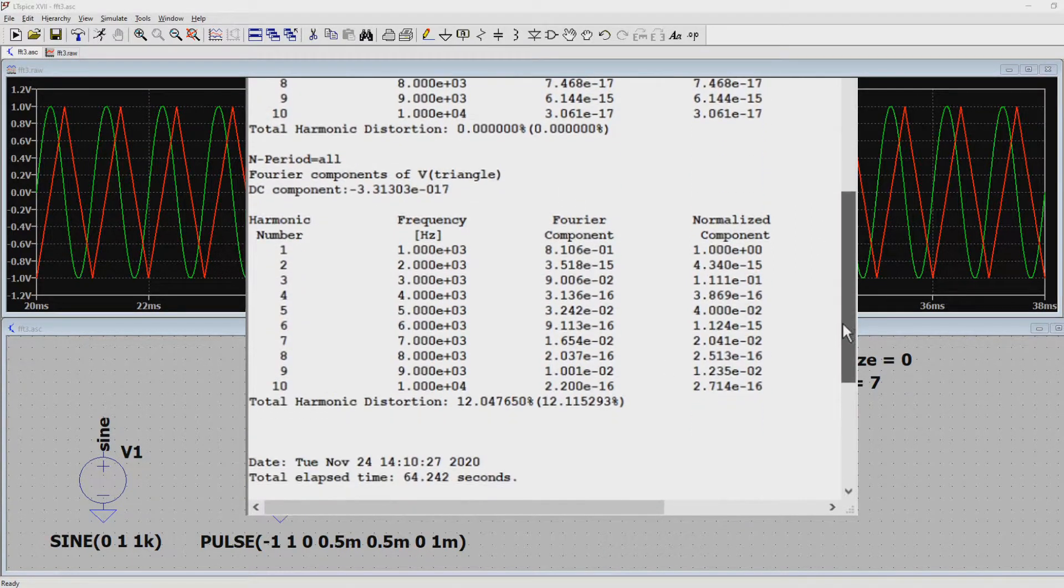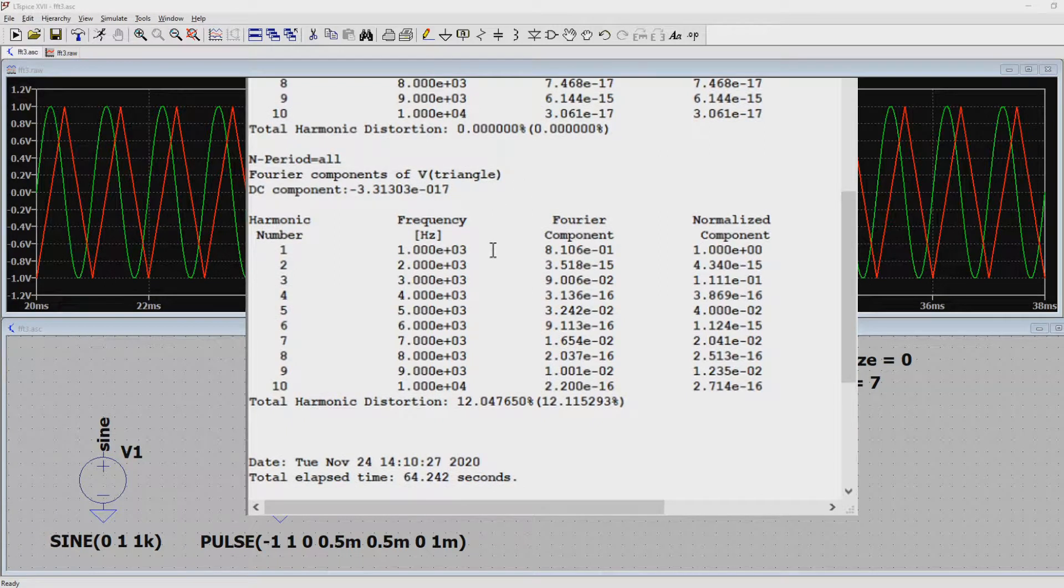Now under this analysis is the analysis of the triangle. As you can see there is a component measured for the fundamental. But then basically nothing at the second harmonic. And then at the third harmonic however it measures a peak again. This goes on until the tenth harmonic. And as we can see we have a total harmonic distortion of about 12%. Just like our calculation.